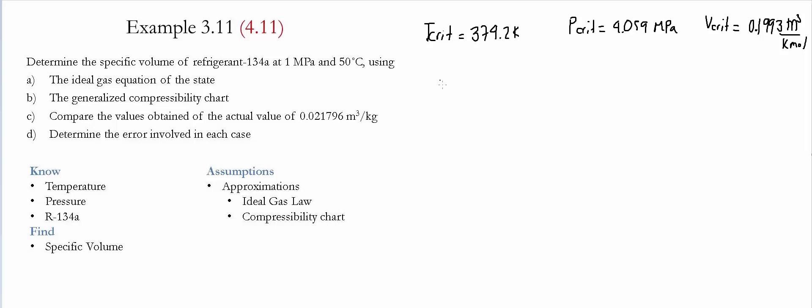The reduced pressure equals the actual pressure divided by the critical value. In this case we have 1 megapascal divided by 4.059 megapascals, which gives us 0.246. We do the same process for temperature: 323 Kelvin, the working temperature, divided by 374.2 Kelvin, which gives us 0.863.